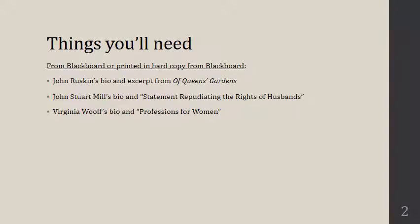Things that you'll need during this lecture from Blackboard include the three readings that the lecture will be discussing. You can look at the PDFs on Blackboard, or if you printed them and have them available in hard copy, which some people do so that they can more easily annotate them, you'll want the hard copies. The readings I'm referring to are John Ruskin's bio and the excerpt from his essay Of Queen's Gardens. You'll also want John Stuart Mill's bio and his paragraph statement, Repudiating the Rights of Husbands, as well as Virginia Woolf's bio and Professions for Women.